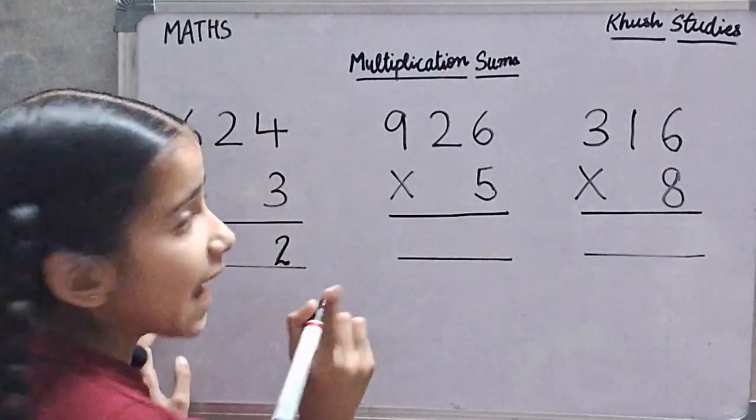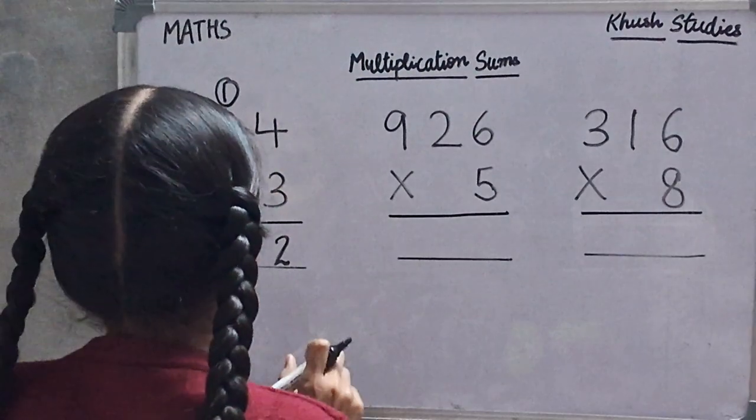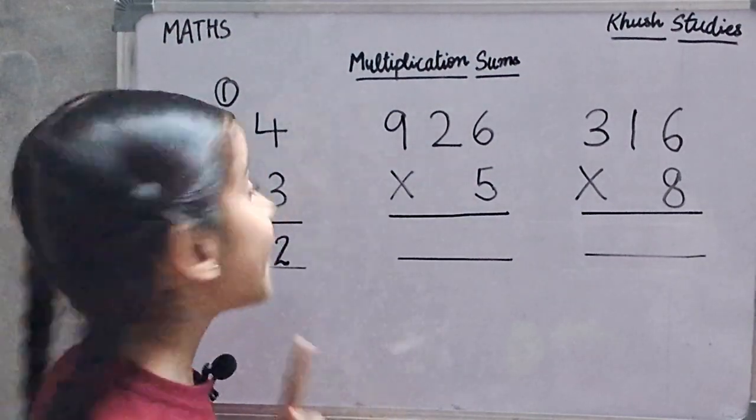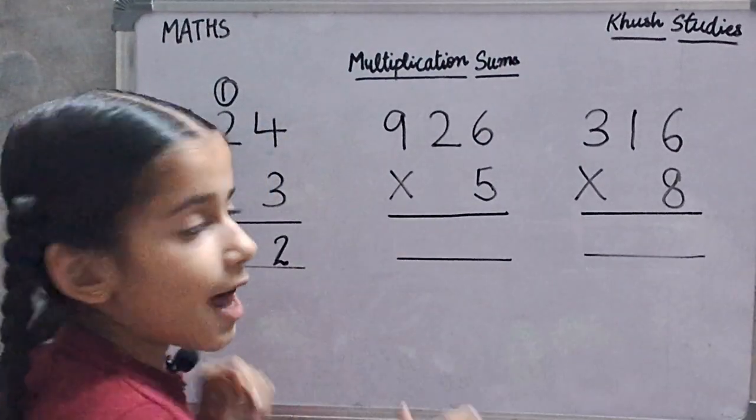We will carry 1 on 2. 3 times 6, we will add the carry. 3 times 6 plus 1 is 7.